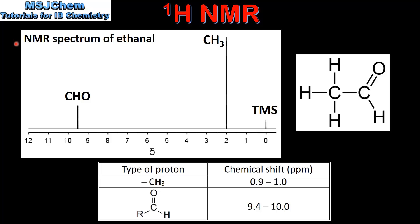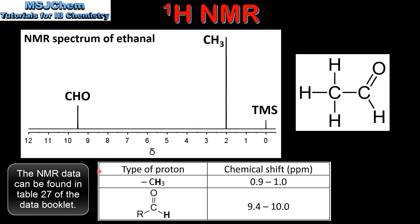Next we look at the NMR spectrum of ethanol in more detail. On this spectrum we have two peaks. By using the data from the data booklet we can identify the type of proton and its chemical shift. For example, we have a peak here at around 9.5 ppm which corresponds to the hydrogen atom in an aldehyde group. The peak at 2 ppm corresponds to the three hydrogen atoms in the CH3 group. If we look at the structural formula of ethanol we can see it's composed of a CH3 group and an aldehyde group.